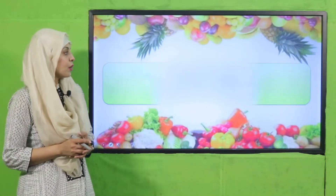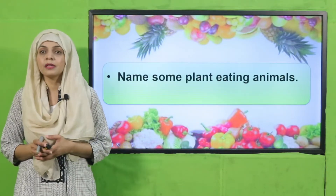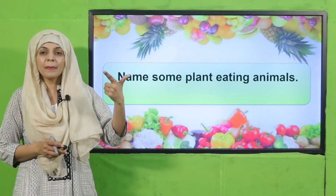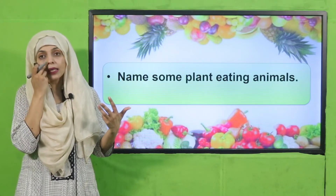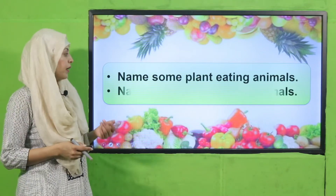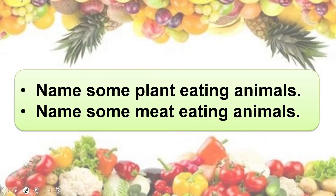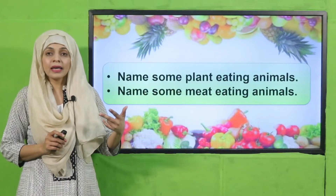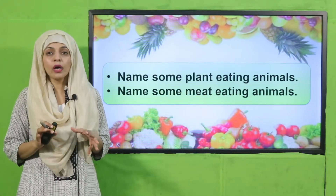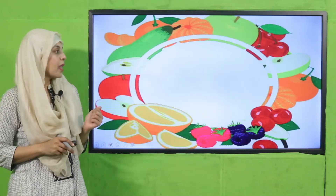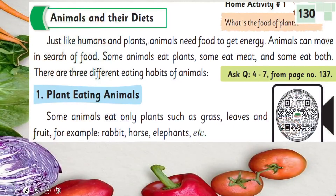Some pre-reading questions: name some plant-eating animals — goats, rabbits, cows, deer; they all feed on plants. Very good. Now name some meat-eating animals — cats, dogs, lions, wolves; they all feed on meat or other animals.